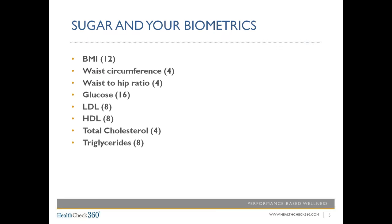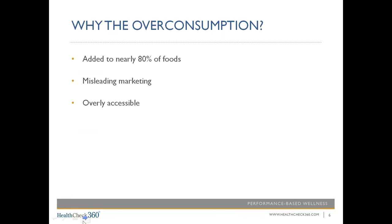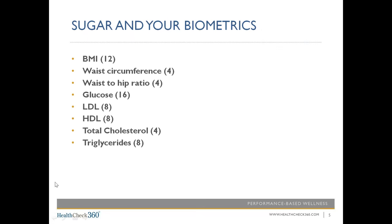Those numbers listed next to each biometric are the number of available points you can score on your Health Check 360 screening. For example, your BMI is worth up to 100 points. If you add up all the biometrics that sugar can directly affect, that's 64 out of 100 points on your screening.